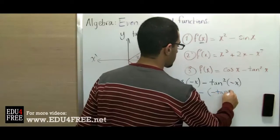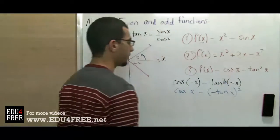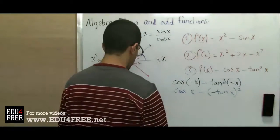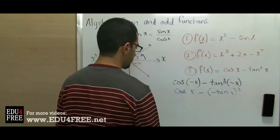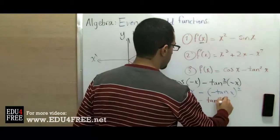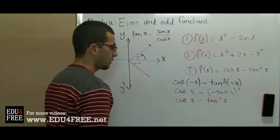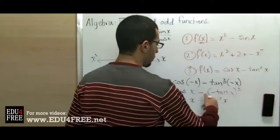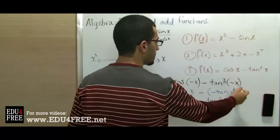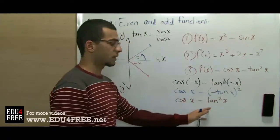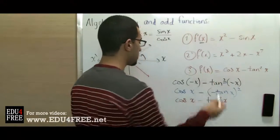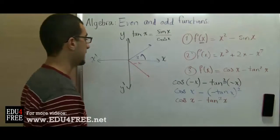We have -tan(-x)² = -(-tan x)² = -tan²(x), because the square of a negative number gives a positive number, so the negative sign is cancelled. We will have cos(x) - tan²(x), which is just the same as f(x). So example number 3 is an even function.